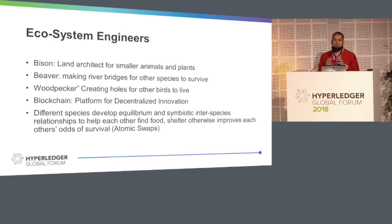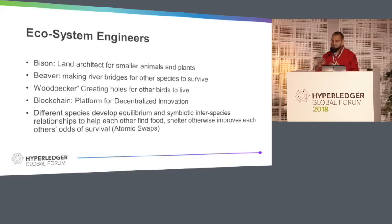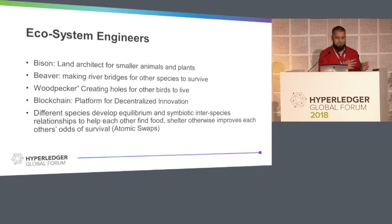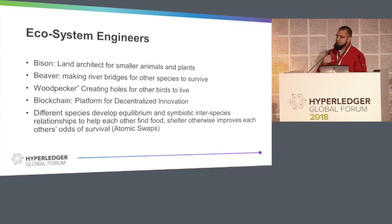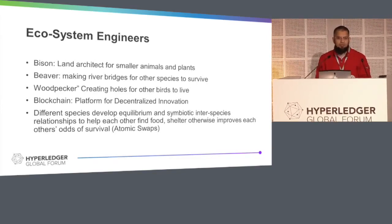In nature, something very strange happens — we call them ecosystem engineers. Large bisons go around the earth, do a lot of damage, but that damage is very good for small animals, weeds, and plants. Beavers make bridges, and those bridges make it possible for other small species to survive. Woodpeckers make holes in trees, and those holes are used by other animals. In nature, we have these interconnected species supporting each other for food chain, shelter, and survival — increasing the survival of other species because of one species. We are working on this when we talk about interoperability — when Bitcoin's network can talk to Ethereum, and Ethereum can talk to other blockchains. Atomic swap is one work in this direction.